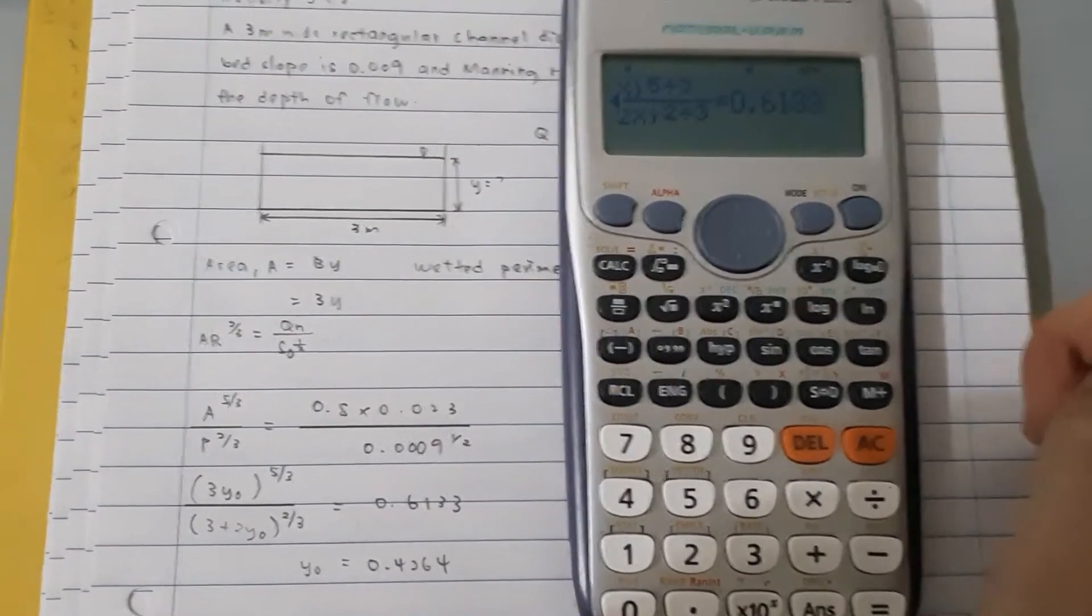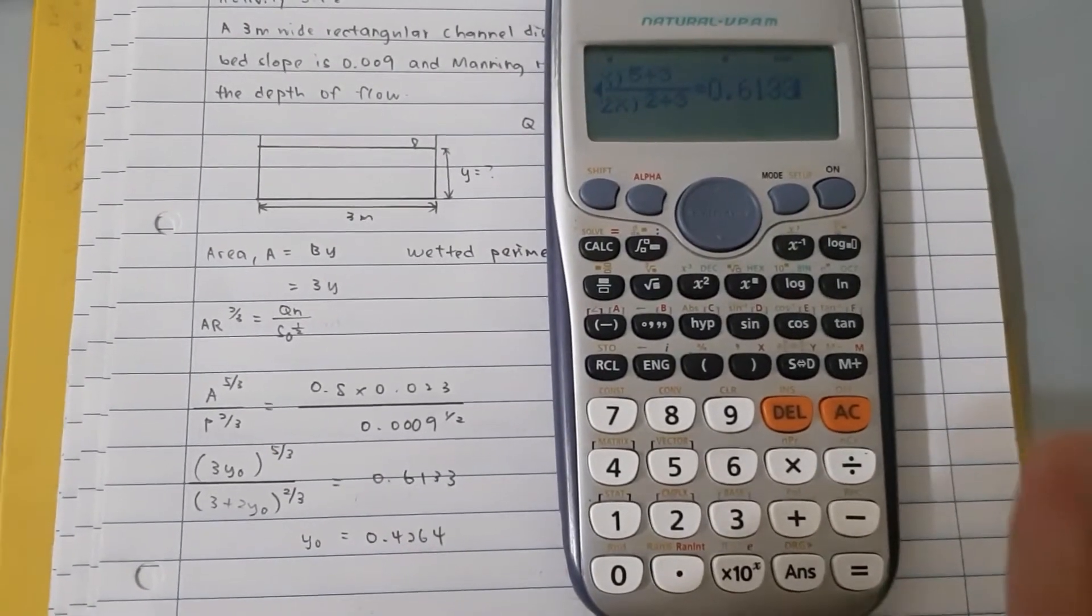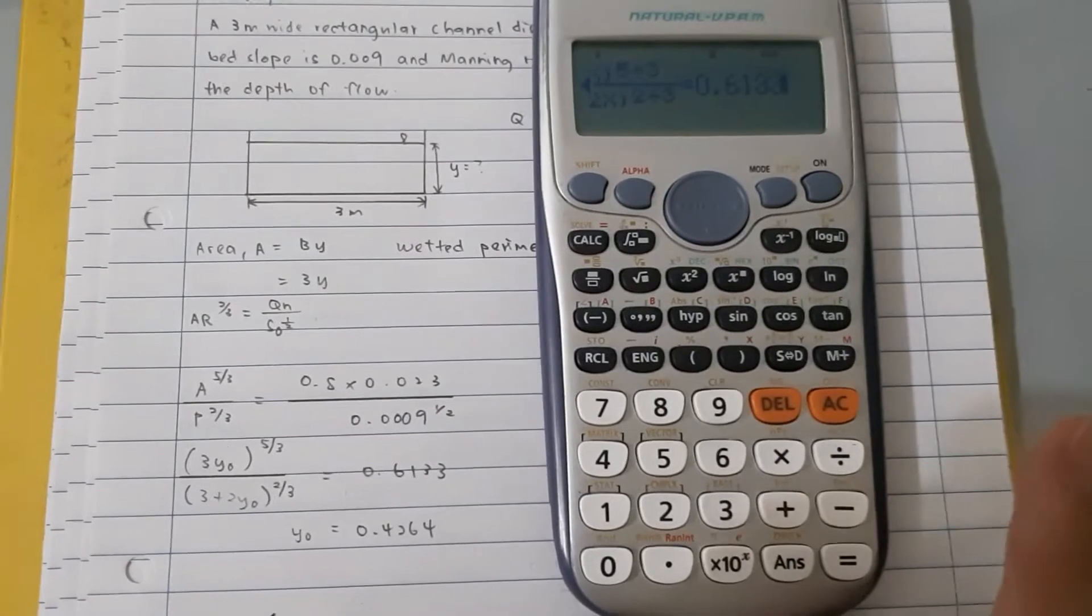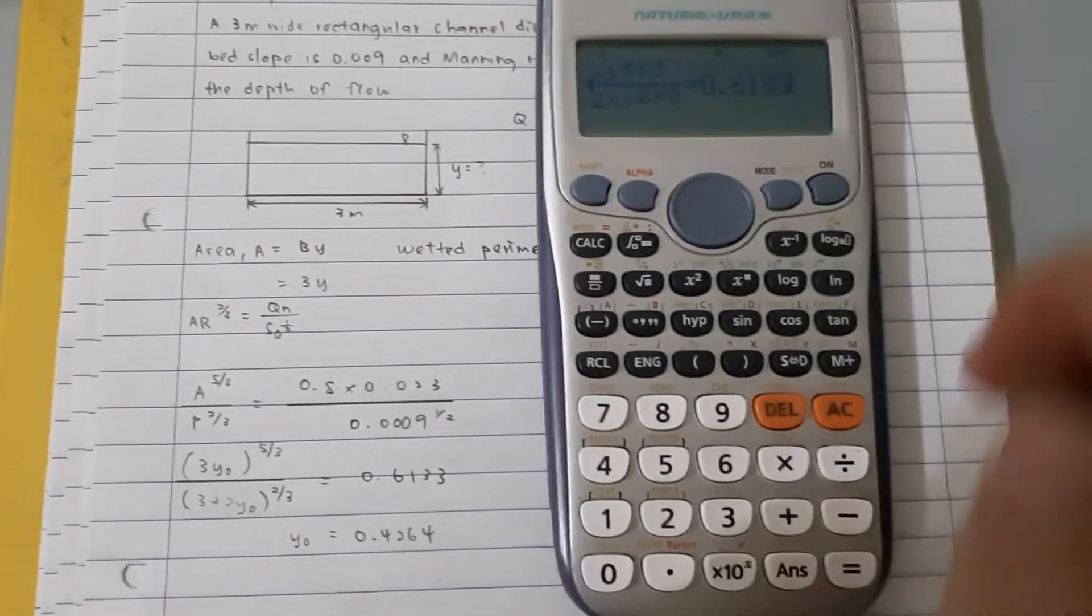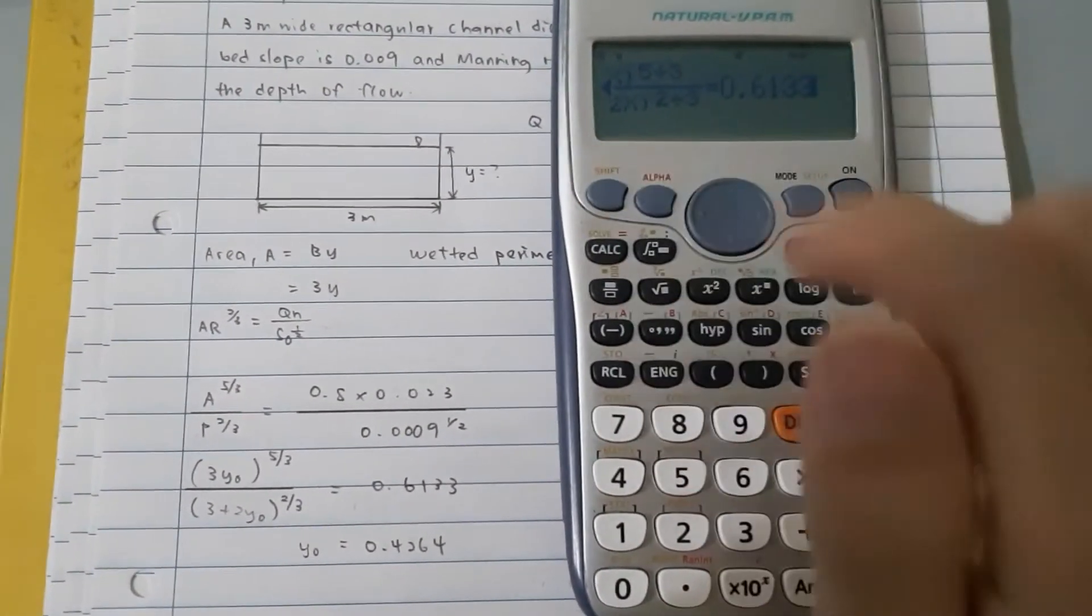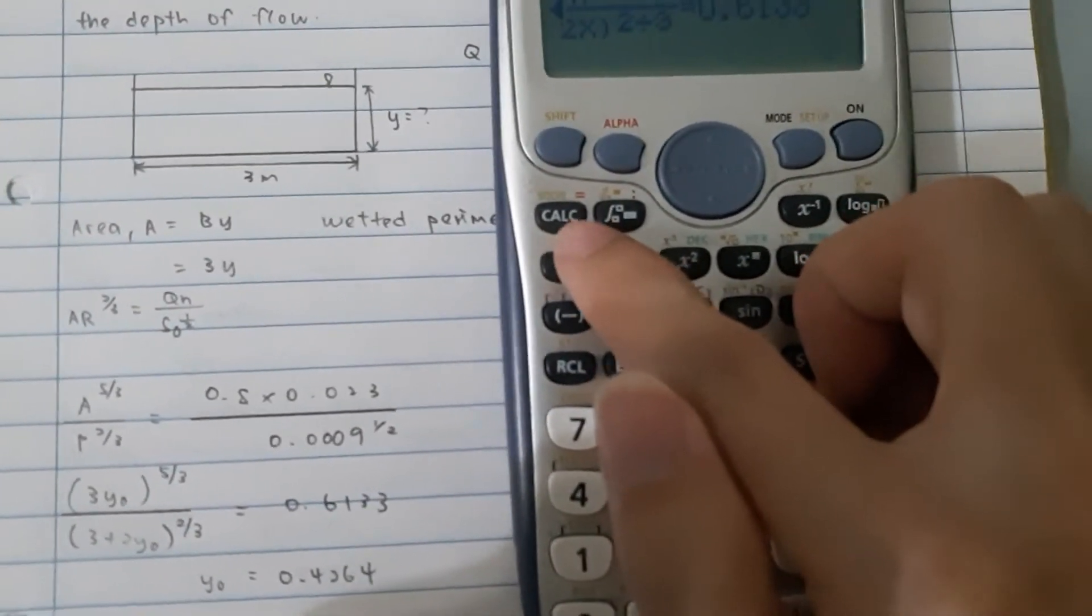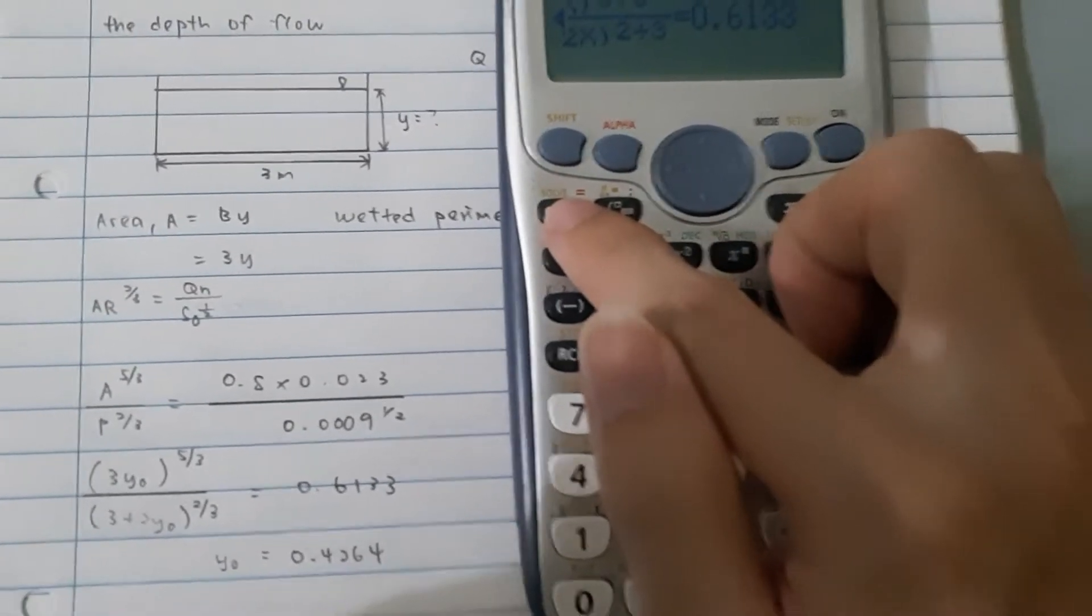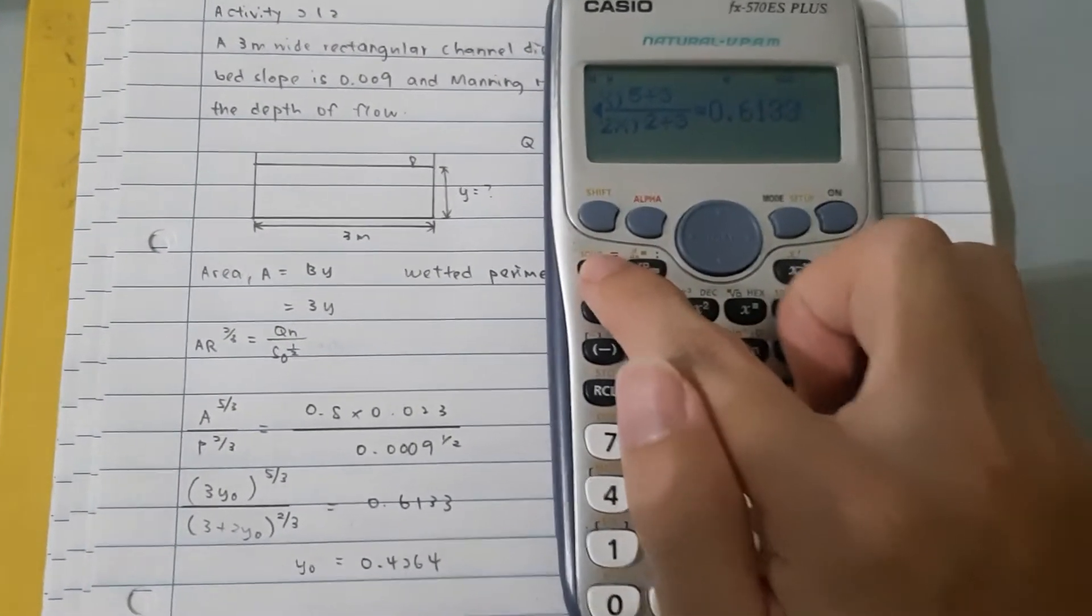So, at here, once again, usually we press the equal button here to get our answer. But, in this case, once again, we must not press the equal button here. Instead of that, we press SHIFT and then CALC again. Because, as you can see, CALC button is actually representing the solve function also. Then, after we press SHIFT, then we press CALC.